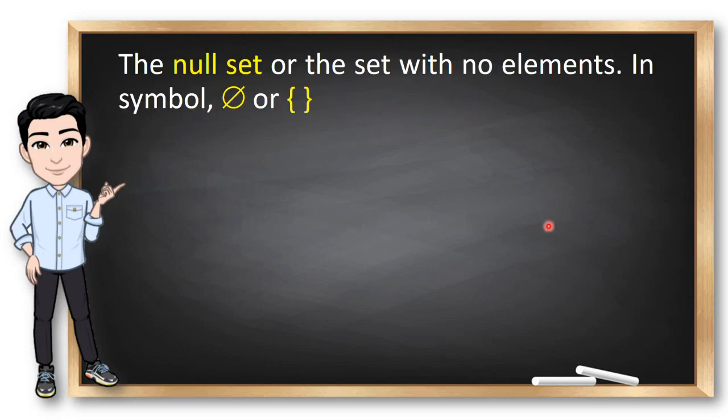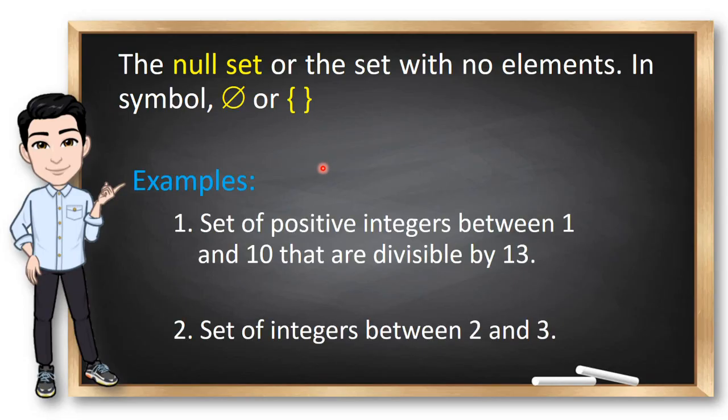And we also have the null set. These are sets with no elements. So, if there's no element in the set, you can write it as a circle and a slash or braces like this. Example. Set of positive integers between 1 and 10 that are divisible by 13. Is there a number between 1 and 10 that is divisible by 13? None. So, this is an example of a null set.